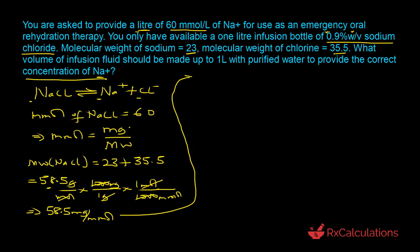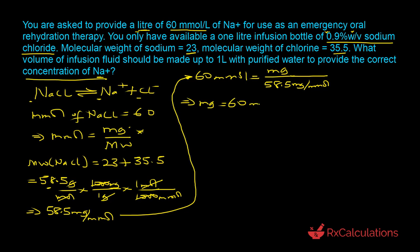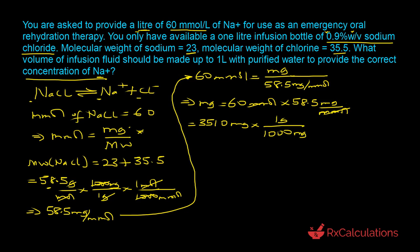We can now solve for the amount in milligrams: 60 millimoles equals the amount in milligrams divided by 58.5 milligrams per millimole. Therefore, the amount in milligrams equals 60 millimoles times 58.5 milligrams per millimole — the millimoles cancel — giving 3510 milligrams. Converting to grams: 3510 milligrams divided by 1000 equals 3.51 grams of sodium chloride.